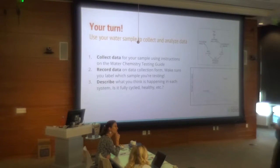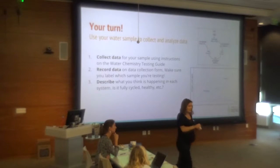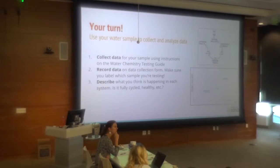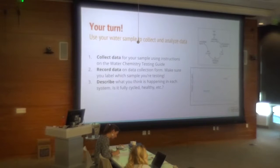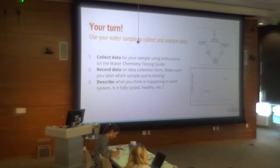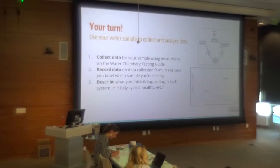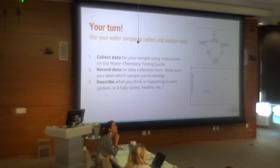One thing to notice with these test strips — this is why nitrate is confusing to measure. Take a look at what zero looks like on your nitrate key — it's kind of cream-colored. Now look at what color the strip is before you even dip it in water — it's already kind of brown, pretty dark compared to zero. So if it stays that color after dipping, the nitrate level is probably zero. You have to be a little careful and see what the test strip looks like before you use it — these keys can be a little bit deceiving.